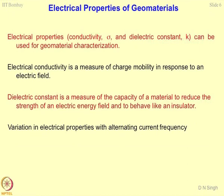The electrical properties of geomaterials are basically conductivity and dielectric constant. If you know conductivity and dielectric constant, the materials can be characterized very easily. Electrical conductivity is a measure of charge mobility in response to a certain electric field. In the previous lecture, we talked about how to determine electrical conductivity using two pieces of equipment: the electrical resistivity box and the electrical resistivity probe.